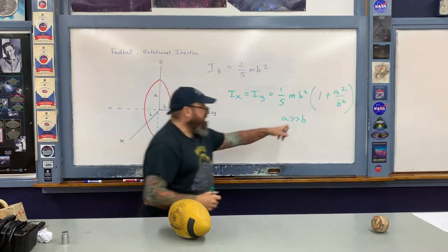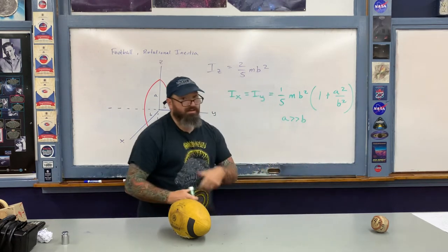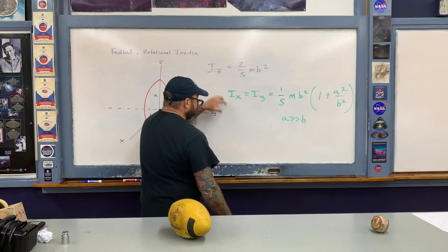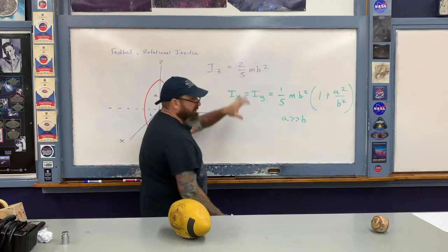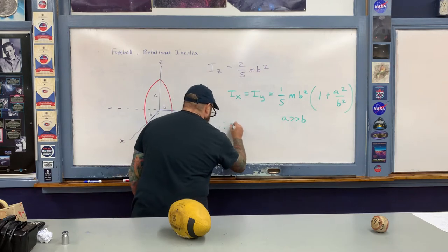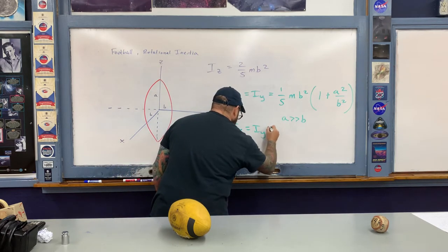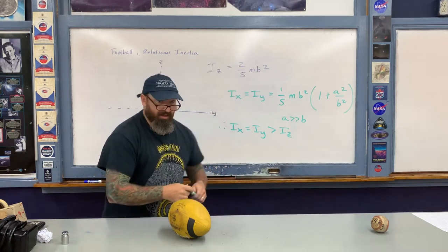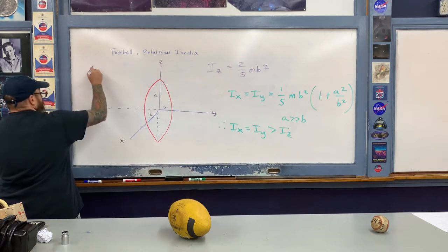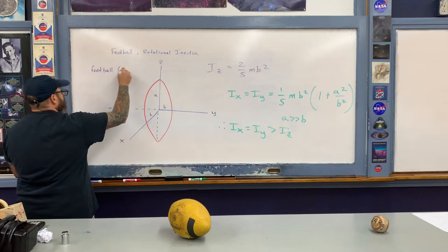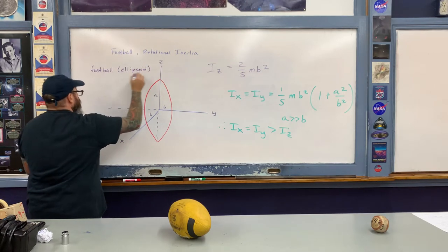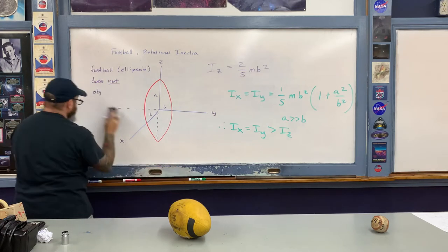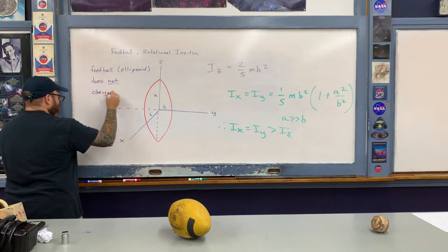Because a is greater than b, the quantity in parentheses is greater than 1, which means Ix and Iy are both greater than Iz. So Ix = Iy > Iz. Incidentally, the football, being an ellipsoid, does not obey the perpendicular axis theorem.